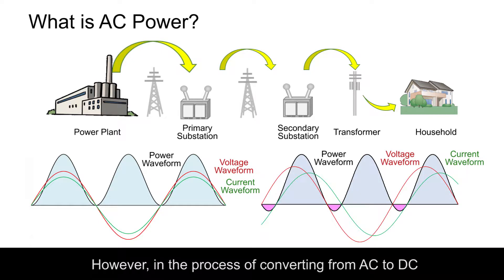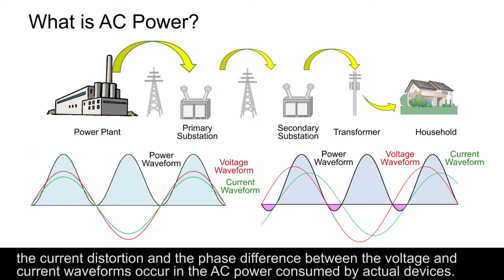However, in the process of converting from AC to DC, the current distortion and the phase difference between the voltage and current waveforms occur in the AC power consumed by actual devices.